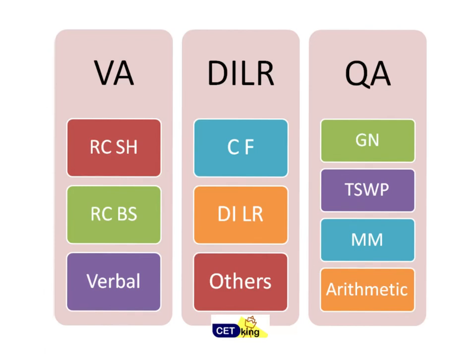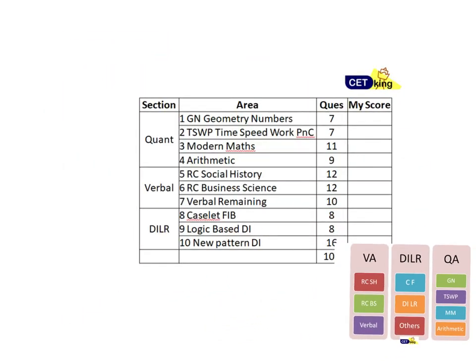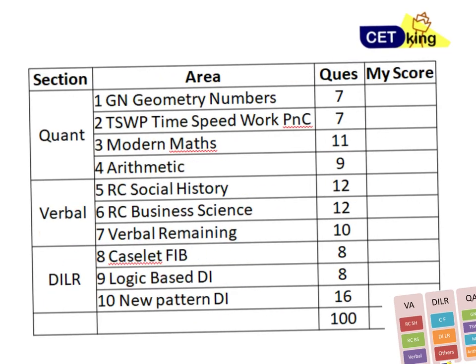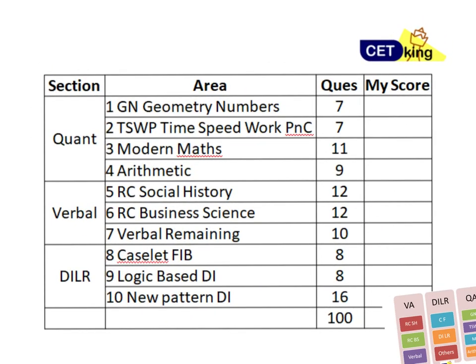So CAT paper contains 3 sections. What we have done, we have divided this CAT paper into 10 sections: 3 in verbal, 3 in logic DA and 4 in quant. So I will take it up in a separate video what I mean by all these sections but in this video I am going to talk about the quant part. So quant there are 4 sections: geometry number 1 section 7 questions, time speed distance work PNC probability 7 questions, modern maths 11 questions, arithmetic 9 questions.